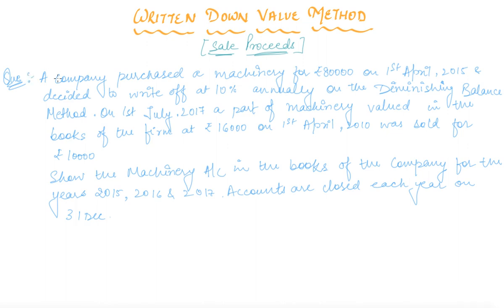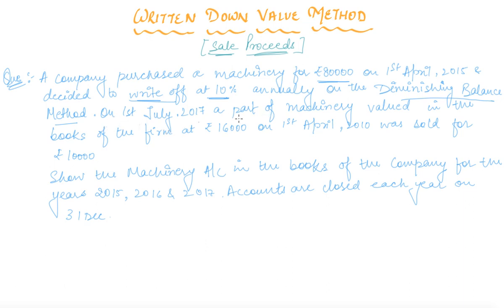Here is the question: a company purchased machinery for rupees 80,000 on 1st April 2015 and decided to write off depreciation at 10 percent annually on the diminishing balance method — that is, the written down value method. With this line it is clear that it is a written down value method question.